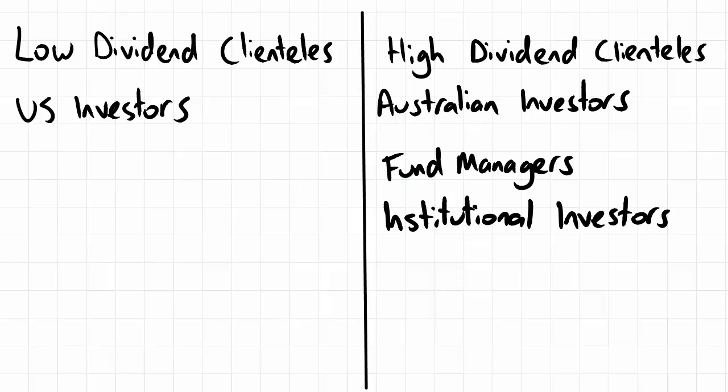Critics argue, however, that this wouldn't really happen, because even if you are catering to a much larger group, markets are still fairly efficient and pricing will be based on the value of the firm according to risk and return characteristics and diversification benefits. So it doesn't matter if you cater to a larger group with favorable tax treatment — the price should still be set by the market efficiently, and it's ultimately not going to matter. Certain investors may prefer some shares over others based on dividend policy and tax treatment, but it shouldn't really have much impact on the value of the shares.